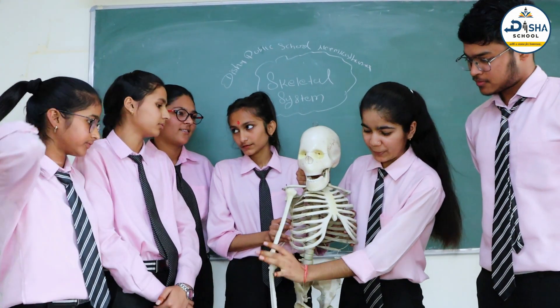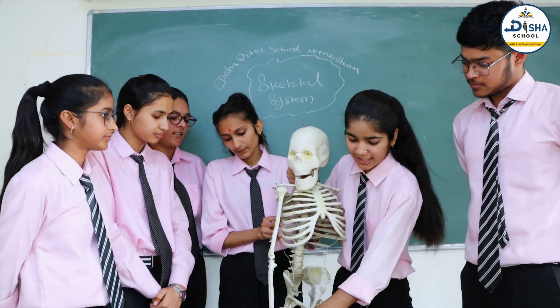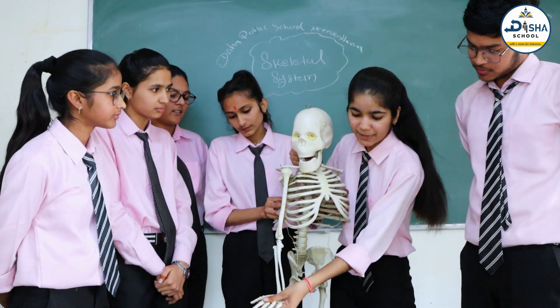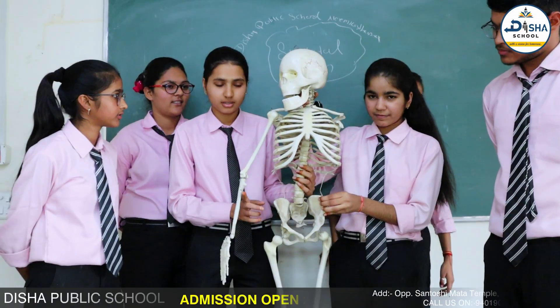This part is known as humerus. This is radius and ulna. This is carpals. This is metacarpals and they are the phalanges.